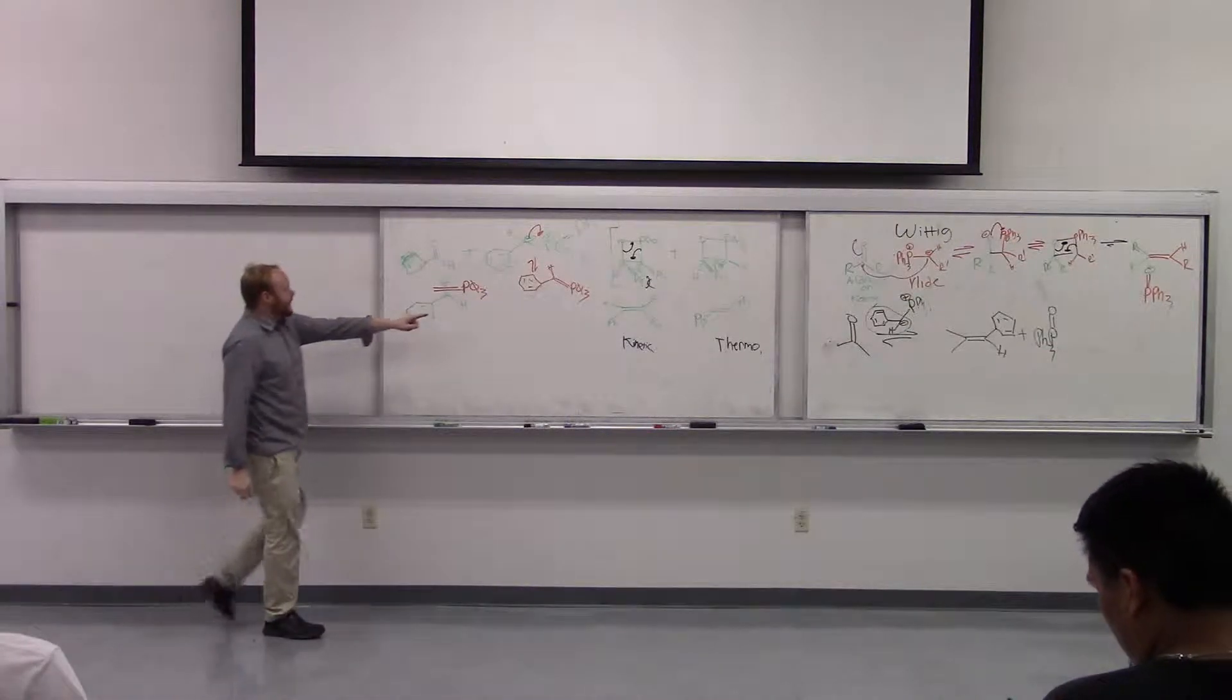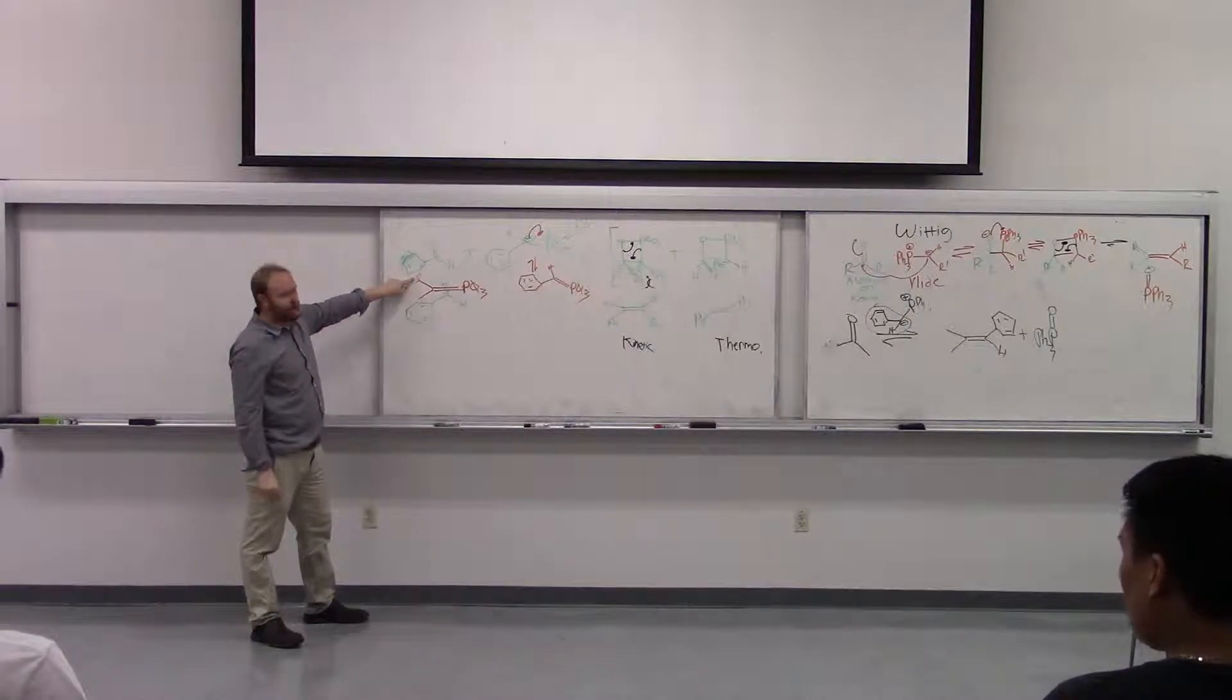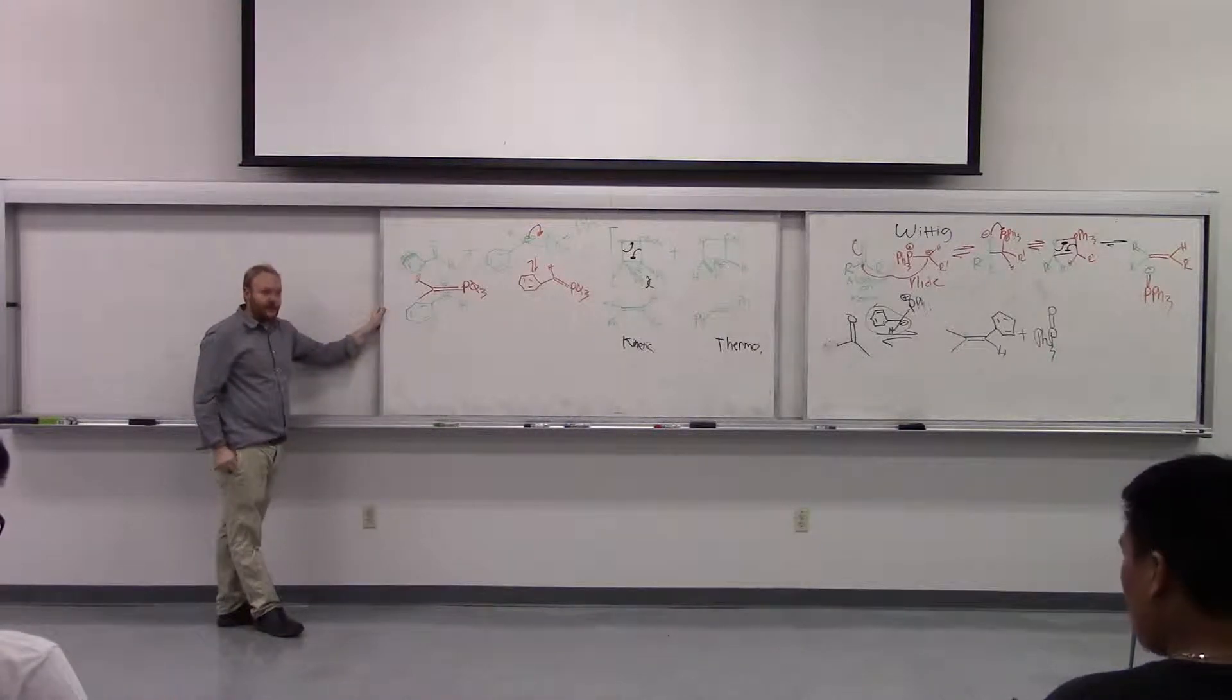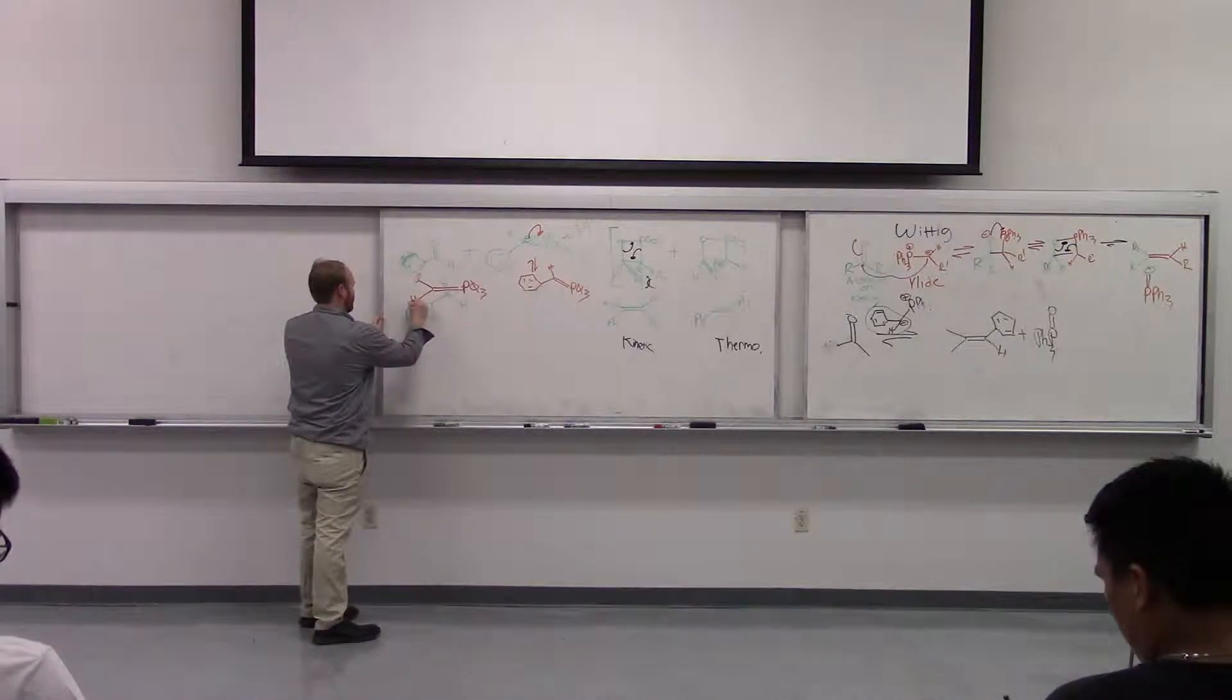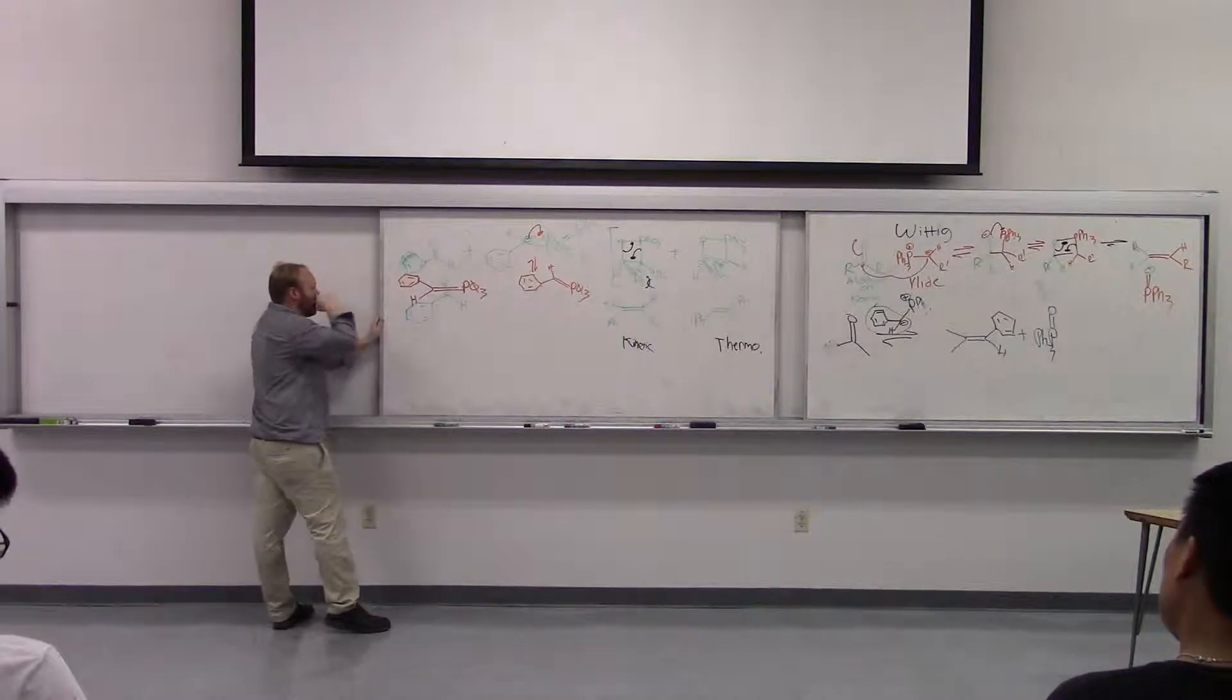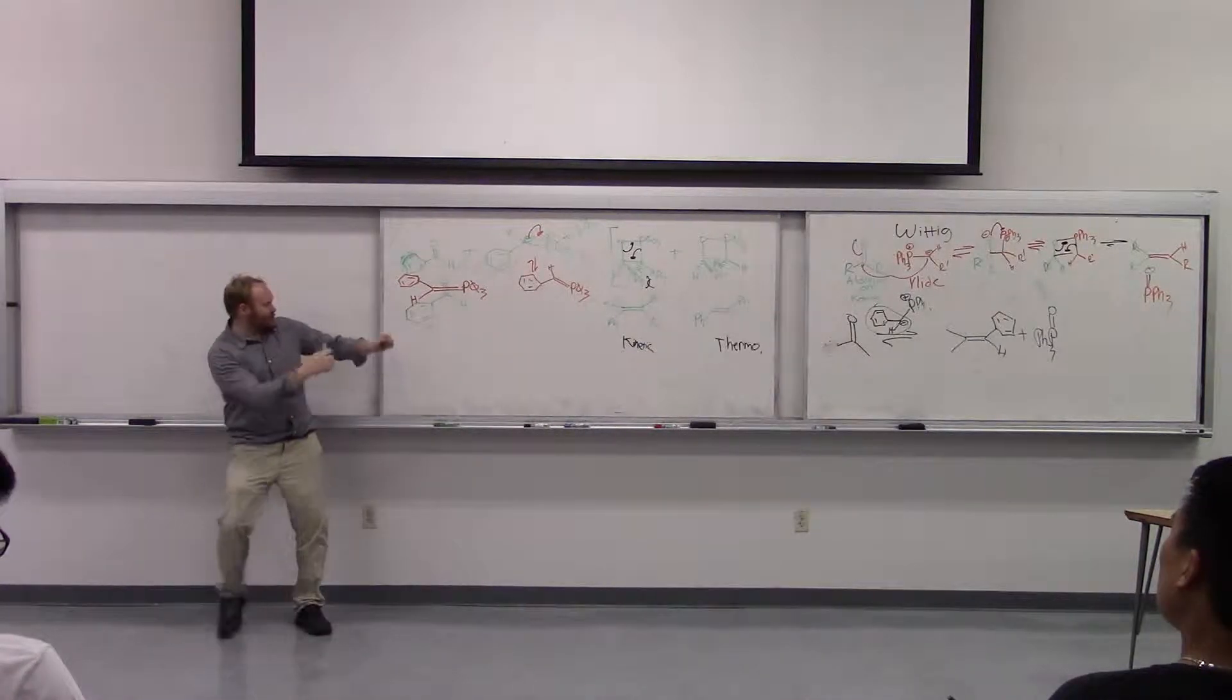And now with this phenyl group, we have two choices, right? We have the phenyl group being here and the hydrogen being here, or the hydrogen being here and the phenyl group being here. Which one needs to be more sterically favored? Hydrogen. So that will mean our phenyl group will be just like this. This is how the ylide will attack the carbonyl from this sort of transition state.